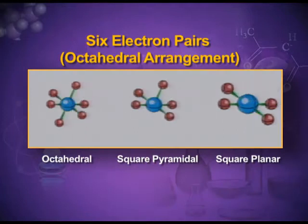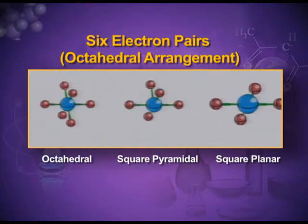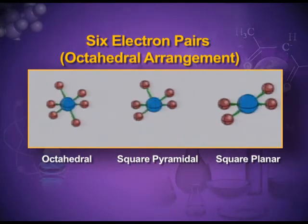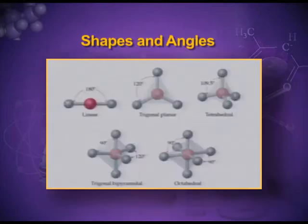The next possible distortion is when there are two lone pairs — example is XeF₄, which has a square planar shape. You can see the two blue lobes which are the lone pairs of electrons. So we can see the distortions in the regular octahedral shape: octahedral, square pyramidal, and square planar. These were the major ideal shapes: linear, trigonal planar, tetrahedral, trigonal bipyramidal, and octahedral. Whenever there is a lone pair, these ideal shapes are distorted and the bond angles are also altered.